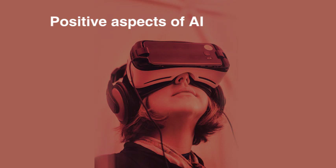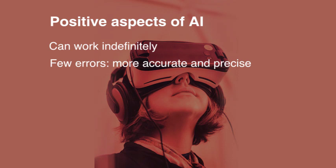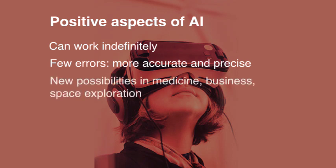What are the positive aspects of artificial intelligence? It can work indefinitely whereas human workers get tired. It makes fewer errors, so there's a higher degree of accuracy and precision. Also, artificial intelligence opens up new possibilities in fields like medicine, business, space exploration, etc.